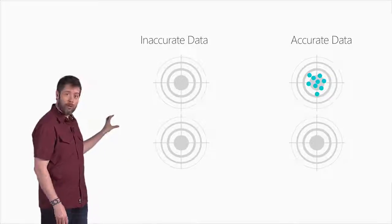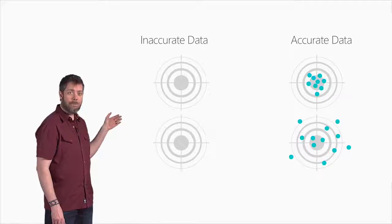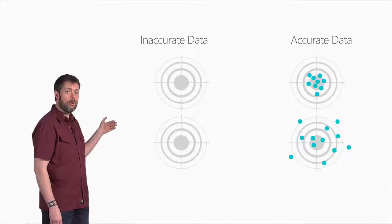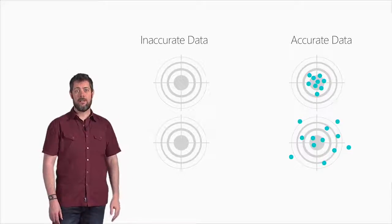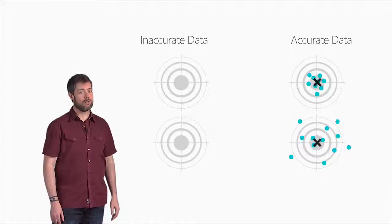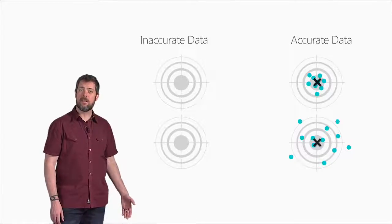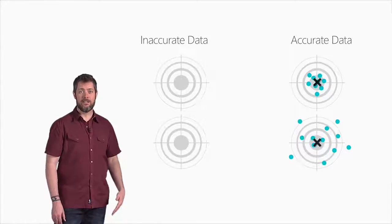And if you look at the next target on the lower right, oddly in the language of data science, our performance on that target is also considered accurate. If you were to map out the center of these arrows, you'd see that it's very close to the bullseye. The arrows are spread all around the target, so they're considered imprecise. But they're centered around the bullseye, so they're considered accurate.